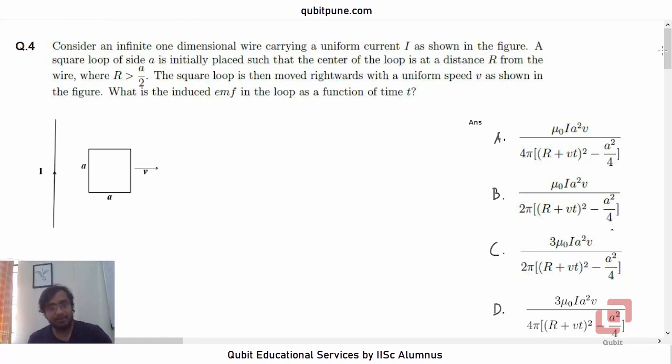Let us read the problem first. Question number 4, consider an infinite one dimensional wire carrying a uniform current I as shown in the figure. So there is this wire and it is carrying a current I in this direction.